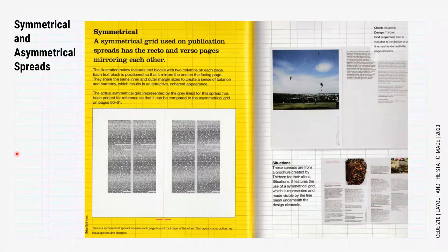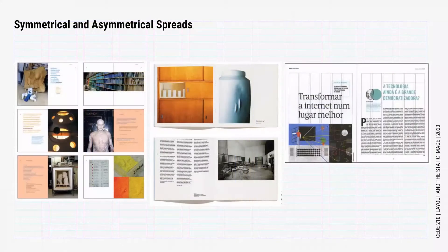However, there are two considerations when making a spread. You can make a symmetrical spread where the margins — top, bottom, inner, and outer — are the same, creating a mirror image on each page. The left page, verso, and the right page, recto, are mirror images of each other. Symmetrical spreads are stable, balanced, and cohesive, and suit more formal purposes.